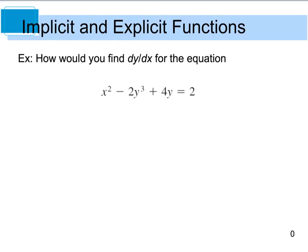Before we do that, I want you to first understand that when we write the term dy/dx, we are really taking the derivative of y with respect to x, which is what the dx means. So when we differentiate terms with just x's, we're going to take the derivative as we normally would. However, when we go to take a derivative of y's, we're going to have to apply the chain rule because we're going to assume that y is defined implicitly as a differentiable function of x. This sounds way more complicated than what it really is, so let's first look at a couple guidelines for implicit differentiation, then we're going to do an example.